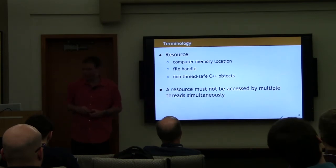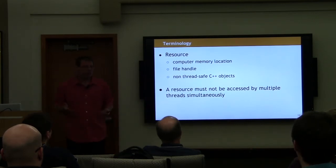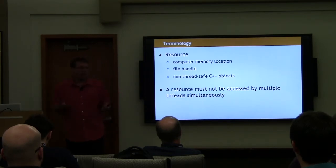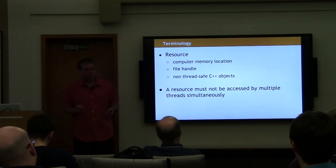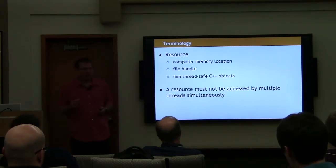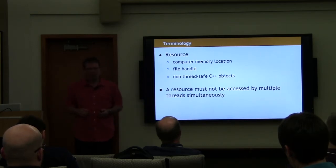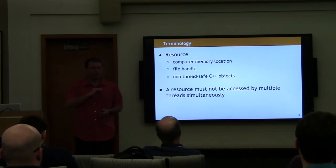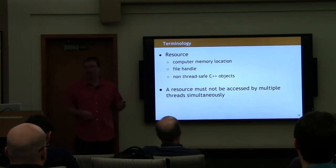Another term we need to define is a resource. There are many resources in a running program — any particular memory location, a file handle, or really any object that you are working with that isn't specifically designed to be thread-safe. The defining characteristic of a resource is that you must not access it from multiple threads simultaneously. This is the rule you have to follow when writing a multi-threaded program. If you have a bug, it is because you violated this rule.